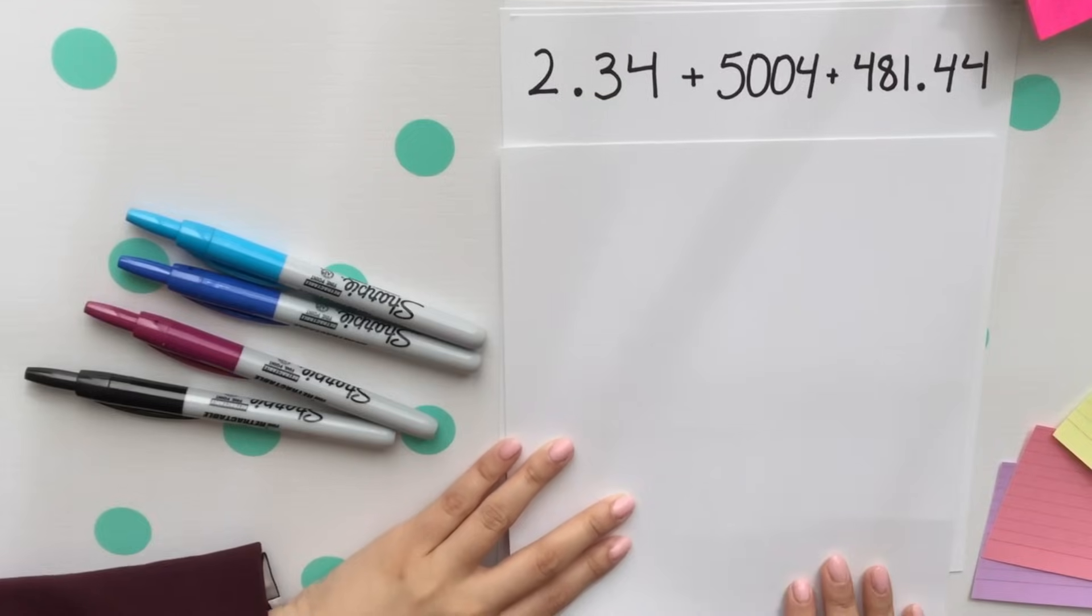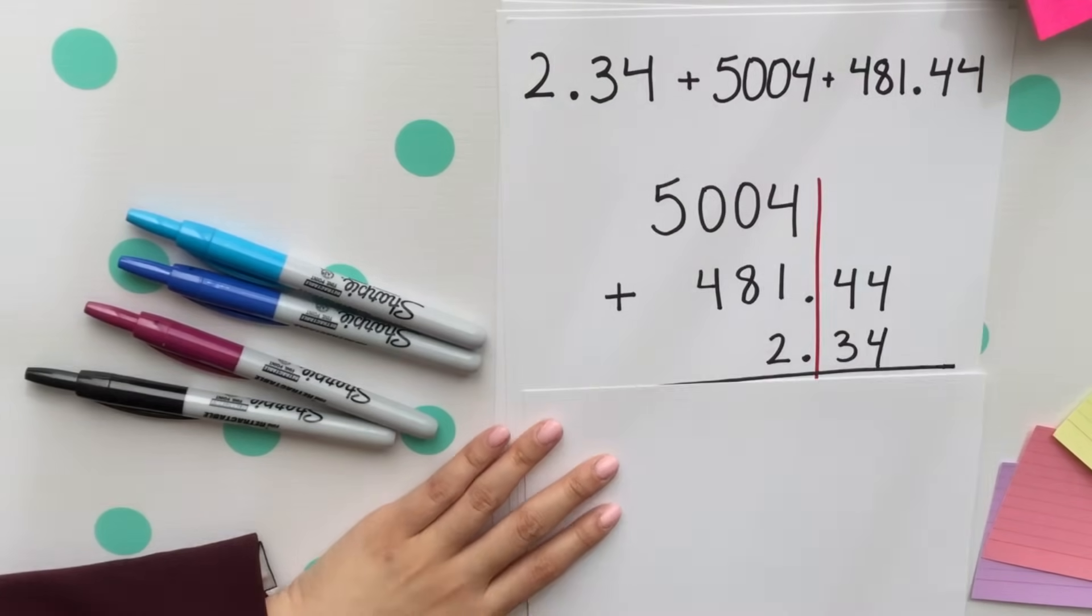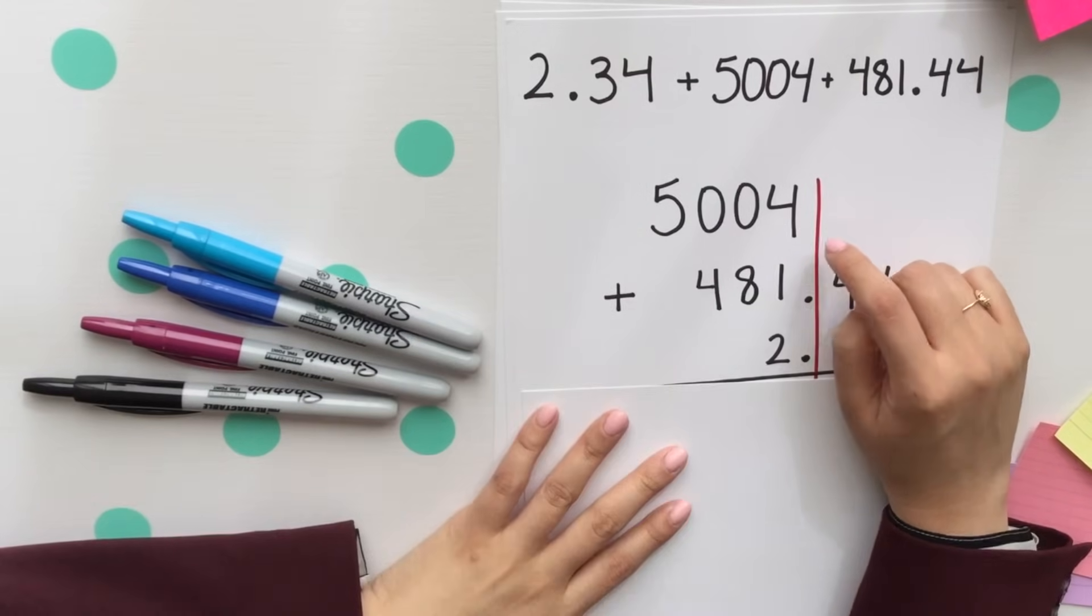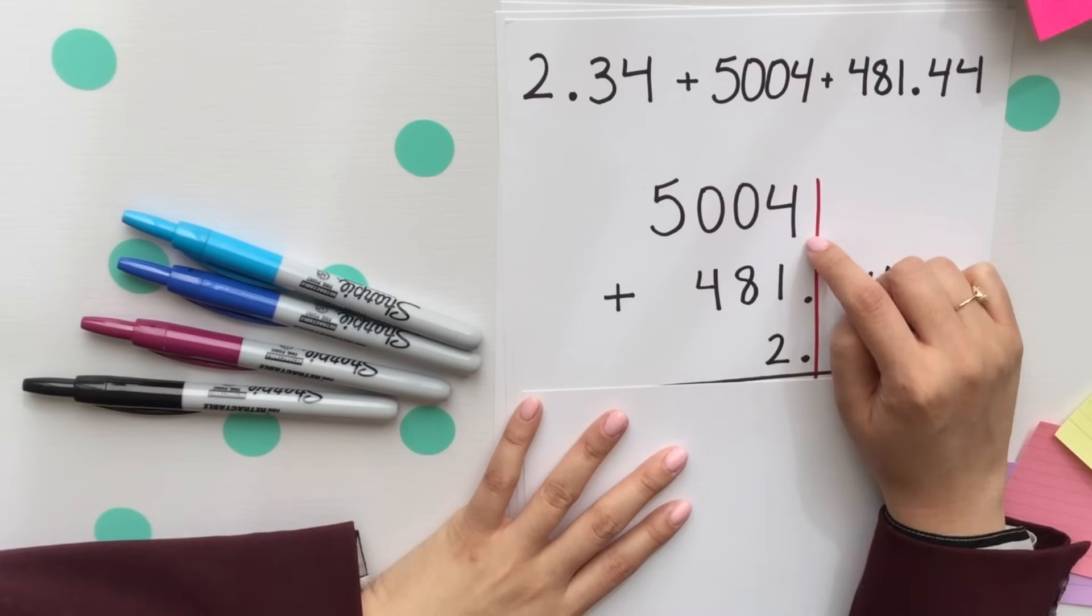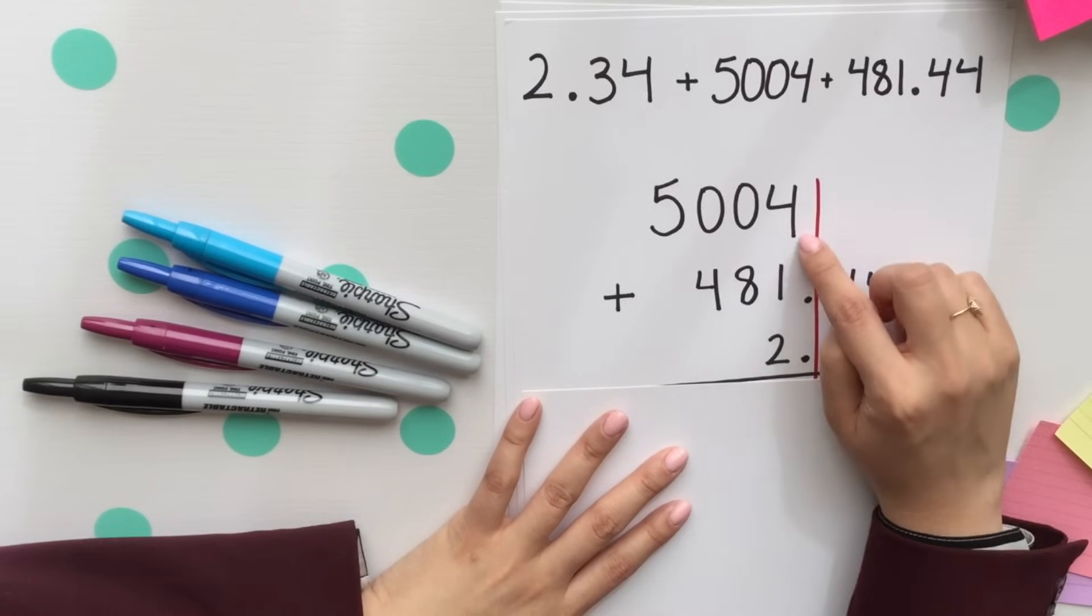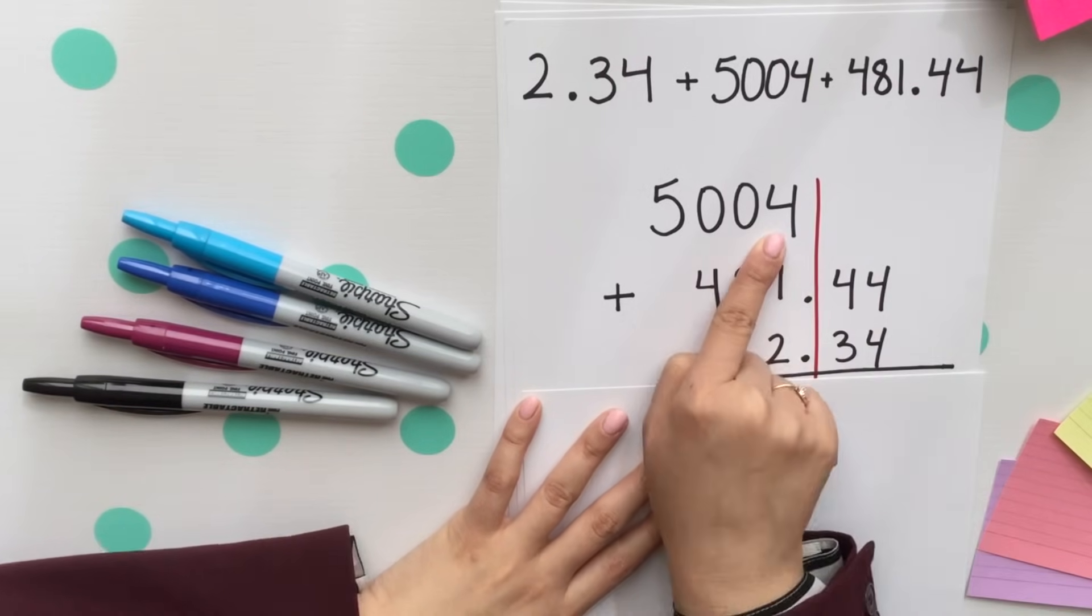For this first example, your first step is to line up all the decimal places. Notice how 5004, there is no decimal. However, where the decimal would be, would be after this four in the ones place. So since we're looking for the least amount of decimal places, that 5004 doesn't have a decimal place, so we will round to the ones place.